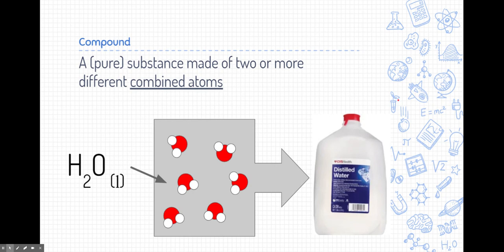Another thing is a compound. A compound like this distilled water is a pure substance made of two or more different combined atoms, but it's purely made of that one compound. So distilled water, if you look at it at the micro level, we see water. It's H2O or two hydrogens attached to an oxygen. And this distilled water jug is only made out of these water molecules. So this is a pure substance made of compounds.